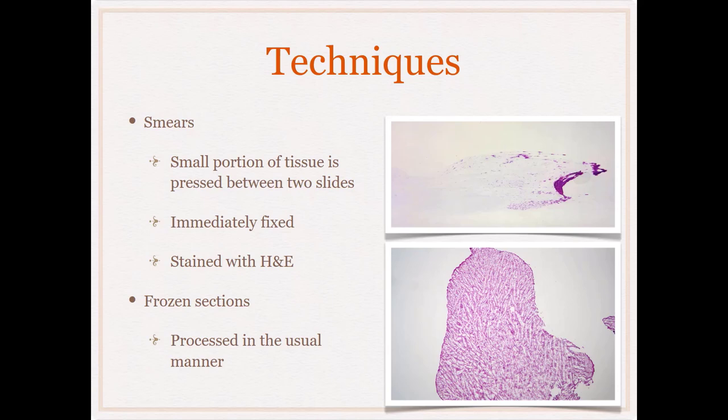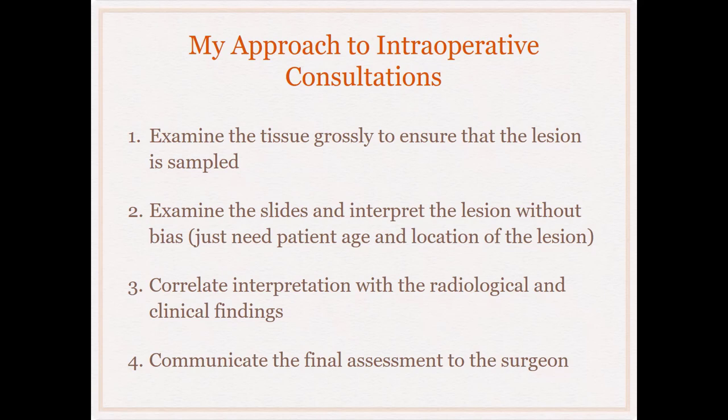Smears involve taking a very small portion of tissue — generally about a millimeter — placing it on a slide, and using two slides to smear that tissue across them. Immediately after, you fix it — you don't want to air dry it — and then stain it with H&E. The frozen section technique is the standard frozen section technique, nothing special.